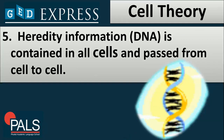We have here another statement under the cell theory: hereditary information, or deoxyribonucleic acid, is contained in all cells and passed from cell to cell — and that is passed from one generation to the next. That means there would be a passing of traits from one generation to another because of the genetic material known as DNA.